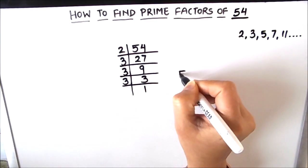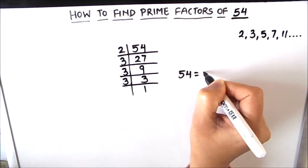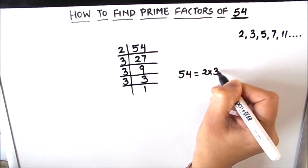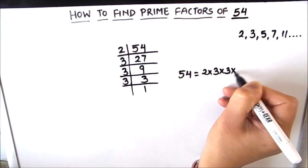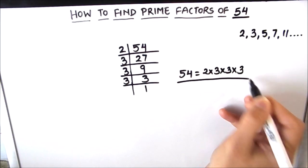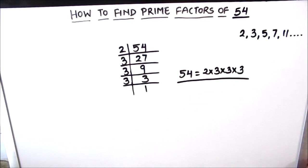So the prime factors of 54 are 2 times 3 times 3 times 3. These are all the prime factors of number 54. So this is how by using the prime factorization method we can find the prime factors of number 54.